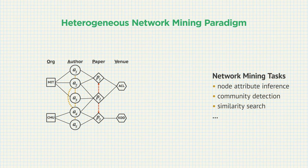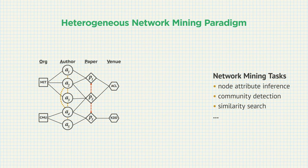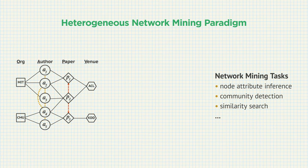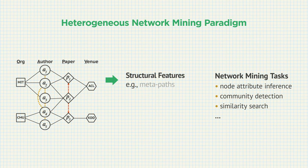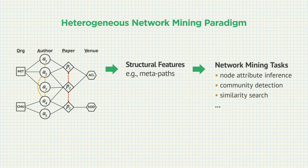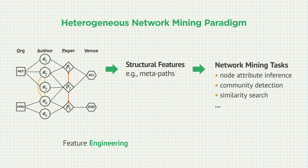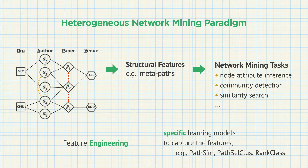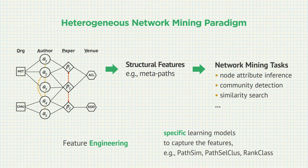Traditionally, these problems are solved in a two-step process. In the first step, one identifies and extracts structure-based network or graph features, such as metapaths. This step corresponds to the feature engineering process in heterogeneous networks, which usually requires domain knowledge and expensive computing. In the second step, one usually needs to design specific data mining and machine learning models to capture these handcrafted features.